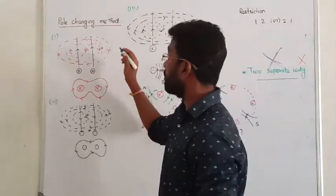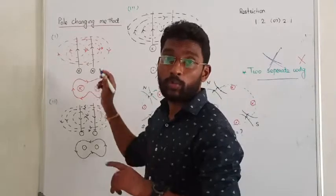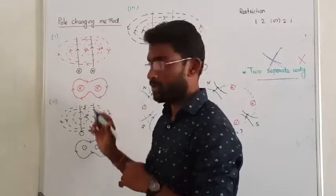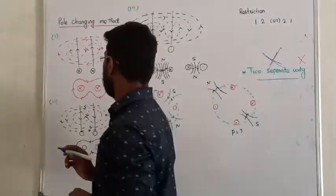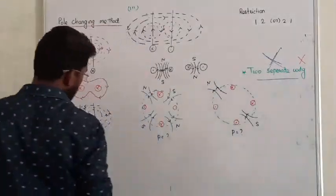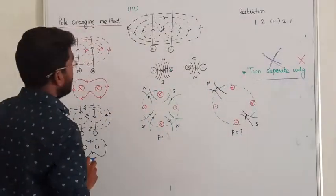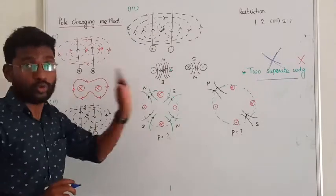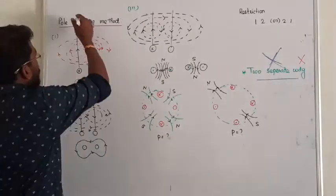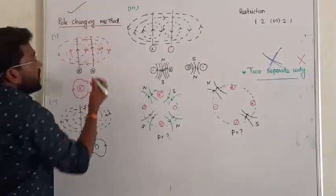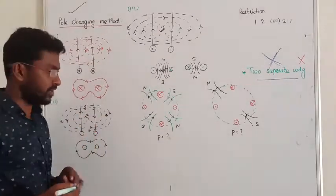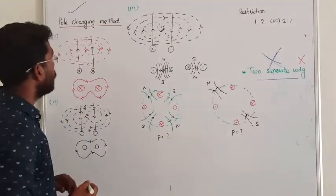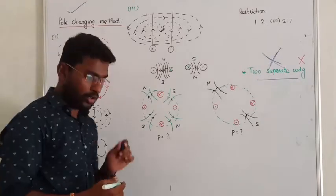We go with the consequent pole changing method. In the consequent pole changing method, what we are going to do is change the number of poles on the stator. That is the key innovation.